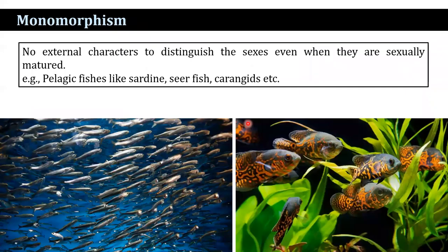What is monomorphism? There are no external characters to distinguish the sexes, even when they are sexually mature. This includes most pelagic fishes like sardine, surfacefish, etc.